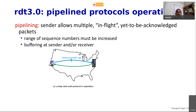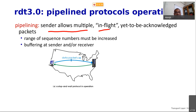The better approach is pipeline protocols. By pipelining we mean allowing multiple in-flight packets — so far we had only packet 0 or packet 1. Now we allow the sender to have multiple in-flight packets, meaning packets that have been sent but not yet acknowledged. One-bit sequence numbers are no longer sufficient; we need many more sequence numbers to identify each packet in flight.